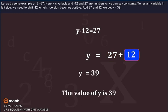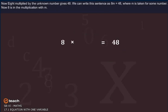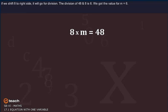Now 8 multiplied by the unknown number gives 48. We can write this sentence as 8M is equal to 48, where M is taken for some number. Now 8 is in the multiplication with M. If we shift 8 to right side, it will go for division. The division of 48 and 8 is 6. We got the value from M is equal to 6.